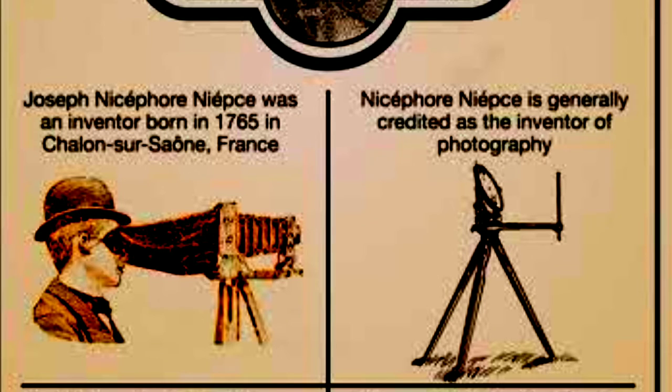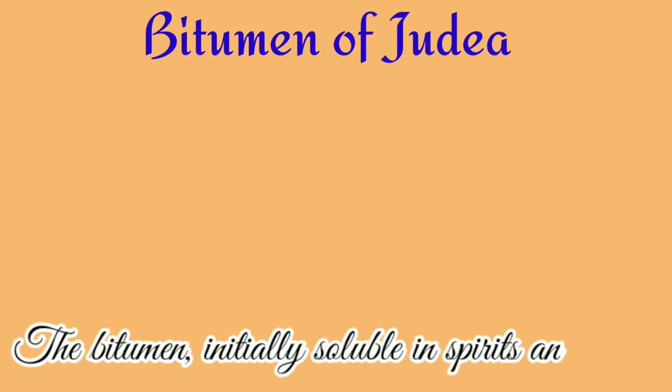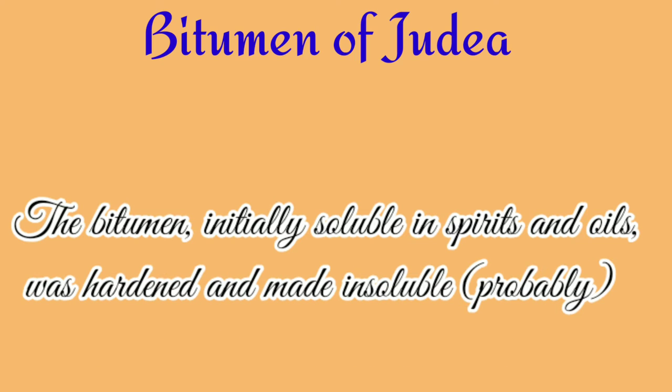A letter written to his sister-in-law around 1816 indicates that Niépce had managed to capture small camera images on paper coated with silver chloride, making him apparently the first to have any success at all in such an attempt. However, the results were negatives — dark where they should be light and vice versa. Because of this, Niépce turned his attention to other substances that were affected by light.